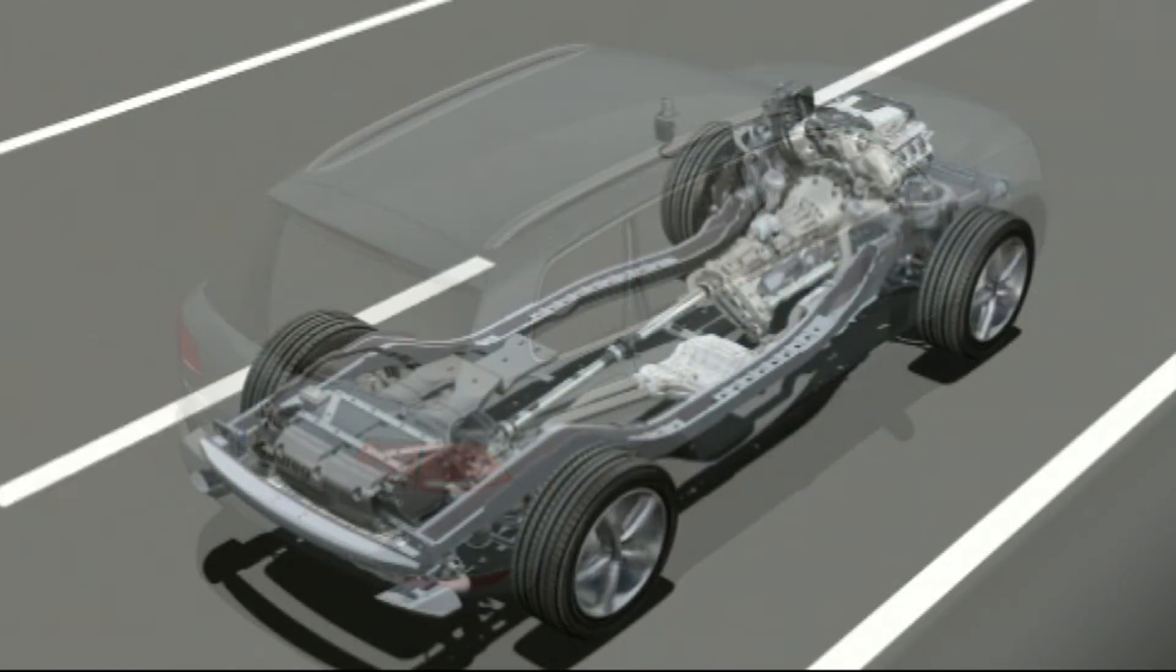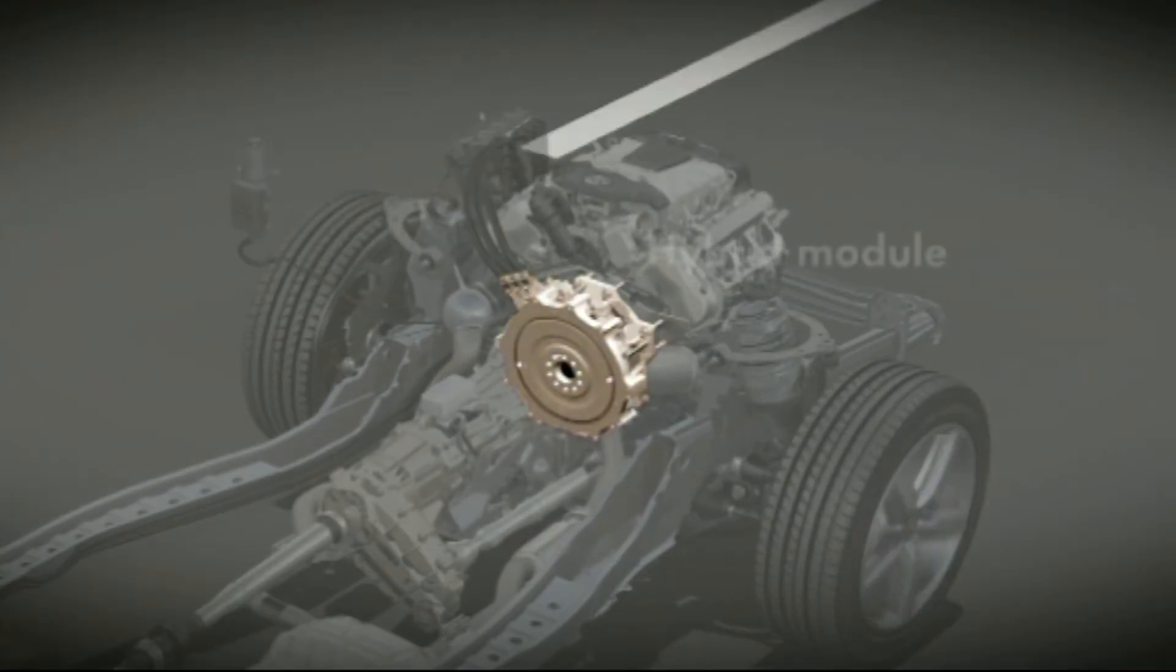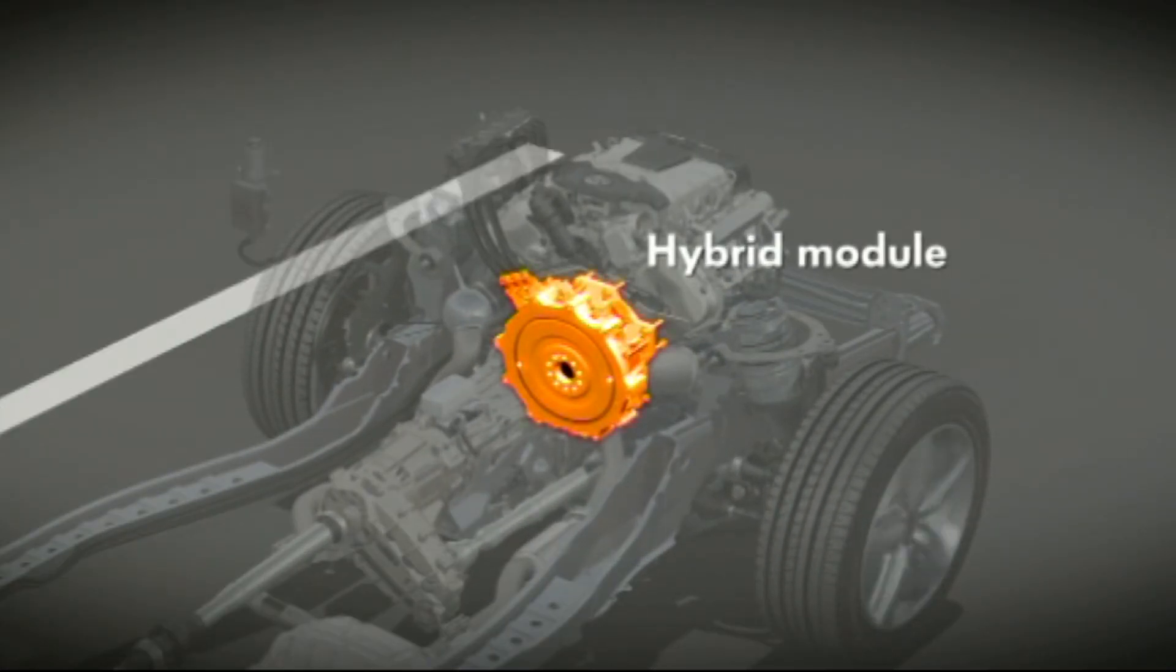The drivetrain of the new Touareg hybrid is a parallel hybrid system. A perfectly matched V6 petrol engine and electric motor deliver refined propulsion. At the heart of the drivetrain lies the compact hybrid module.